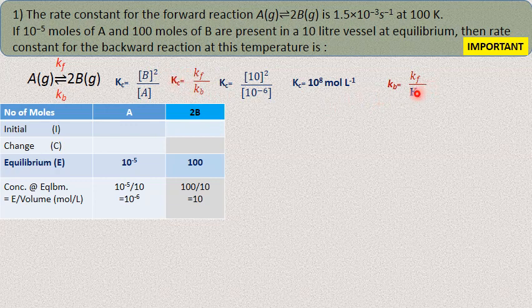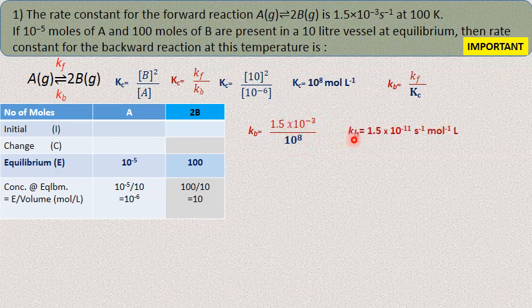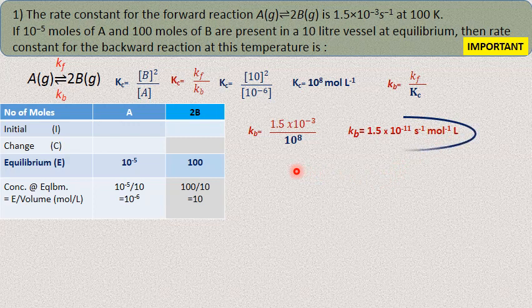Substituting into the Kc expression gives Kc = 10⁸ mol/L. Then using Kb = Kf / Kc, substituting Kf = 1.5×10⁻³ divided by 10⁸ gives Kb = 1.5×10⁻¹¹ per second per mole per liter. The unit arises because mol/L in the denominator becomes mol⁻¹·L when inverted.